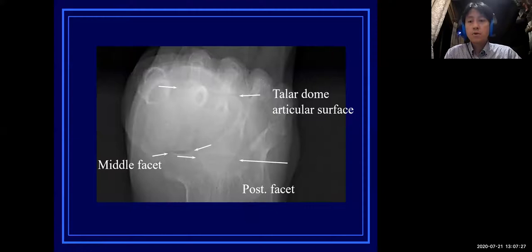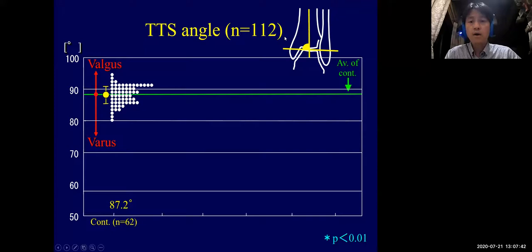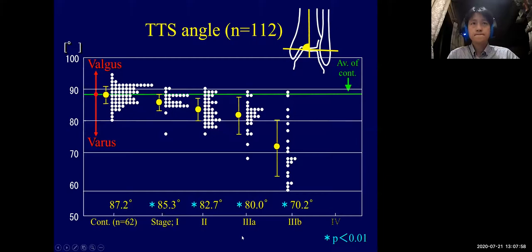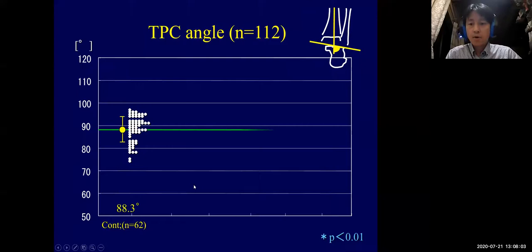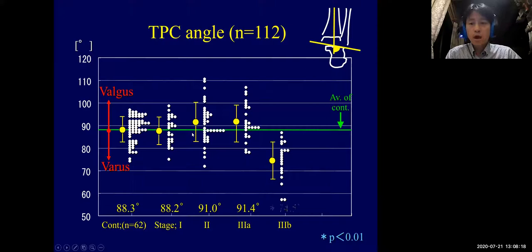In this weight-bearing subtalar view, the irradiation angle is 30 degrees inferior from 100 centimeters posterior from the foot. The talar dome and the middle and posterior facets of the calcaneus are shown simultaneously. The TTS angle of 112 OA cases and 62 controls shows that varus deformity progressed according to the advancement of ankle OA. However, hindfoot alignment was maintained at the subtalar joint until stage 3A, and was spoiled at stage 3B.